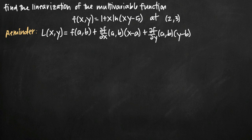Today we're going to be talking about how to find the linearization of a multivariable function. In this particular problem, we've been given the function f(x,y) = 1 + x times the natural log of the quantity xy minus 5. And we've been asked to find the linearization of the function at the point (2,3).